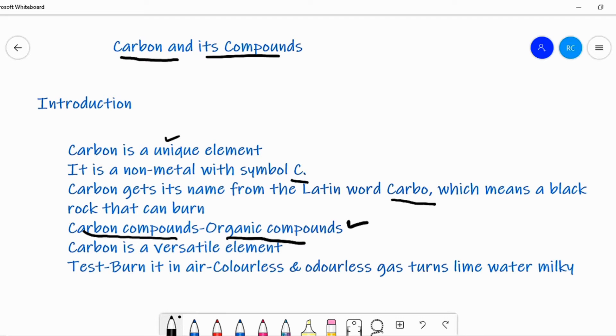Carbon forms a large number of compounds that a separate branch of chemistry is required to study them. Since carbon compounds were initially known only in living organisms, the branch of chemistry dealing with them came to be known as organic chemistry.